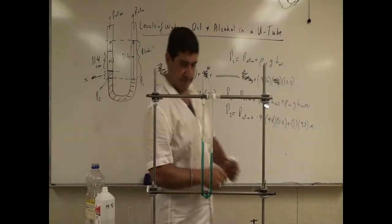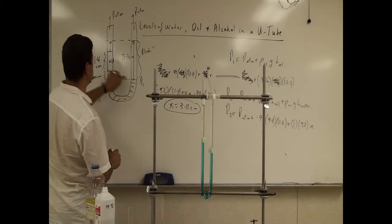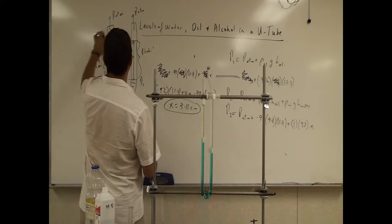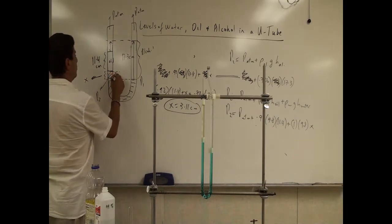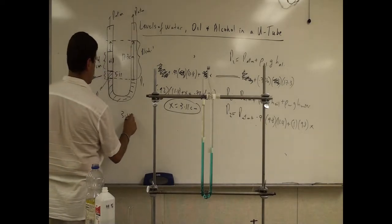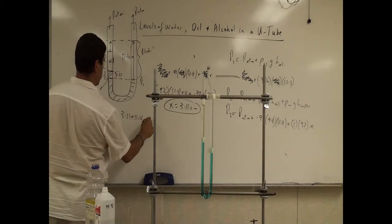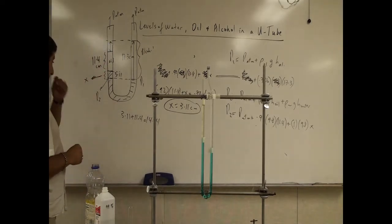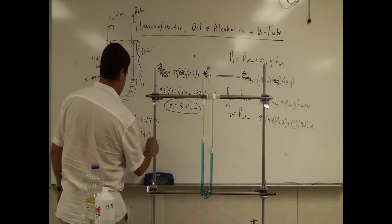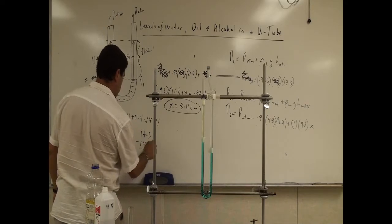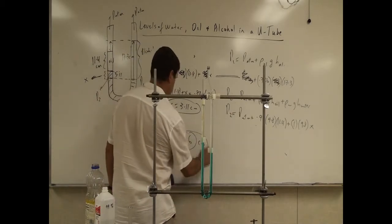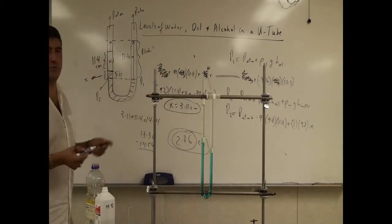You can solve for x easily. There should be a difference of 3.11 centimeters between the water level on one side and the water level on the other side. If the problem asks for the difference in heights at the top, you add x to the oil height: 3.11 plus 11.4 gives 14.54, then subtract from 17.3 — so 17.3 minus 14.54 equals 2.76 centimeters at the top.